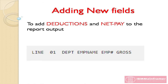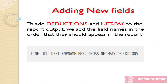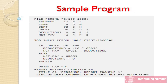If you want to add more fields in the report output, it is very simple and easy to do. For example, to add deductions and net pay to the report output, we add the field names in the order that they should appear in the report. This is the complete program with all the changes that we made so far on the sample program.